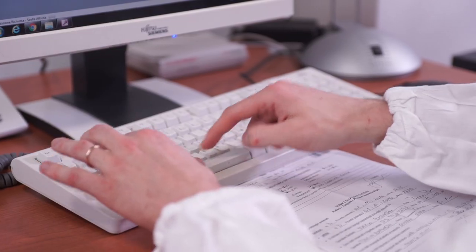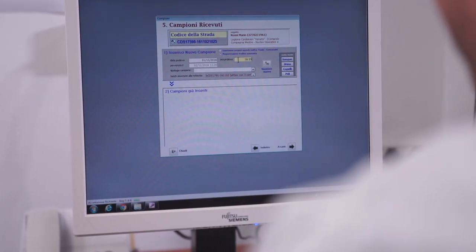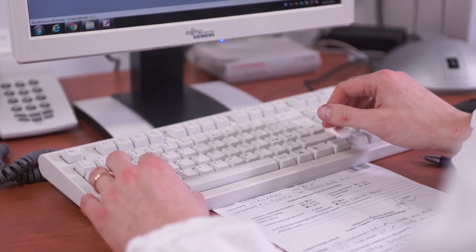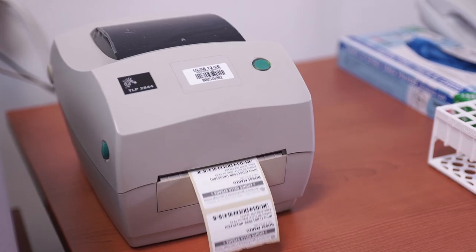As for sample lab receipt, a password-protected file is created and the sample is assigned a unique ID. The date, time, and source of the samples are recorded. Then samples are labeled and barcoded.